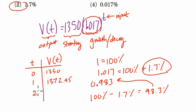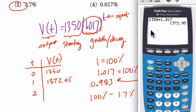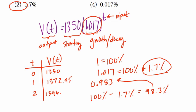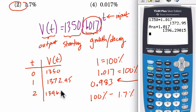Now the next time, we're going to square that, or essentially multiply it by another 1.017, right? So we can just multiply it by another 1.017, and that gets us 1396.29015.